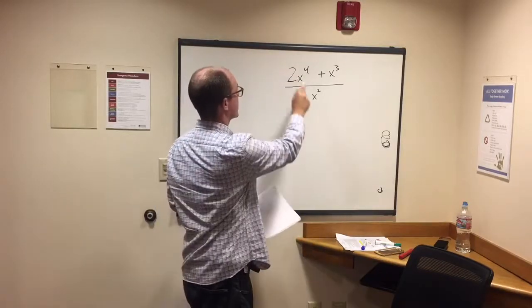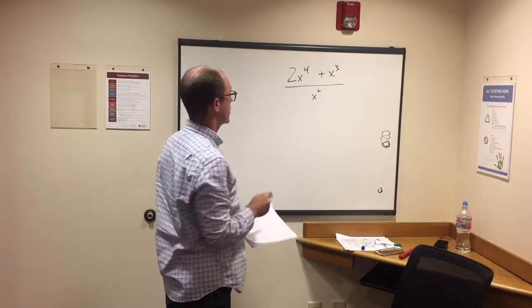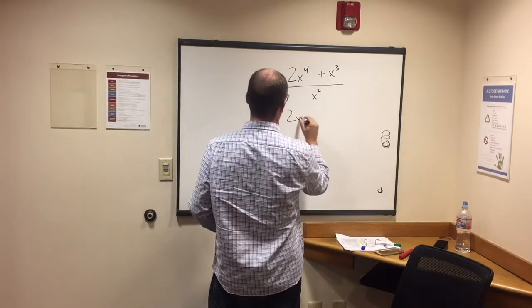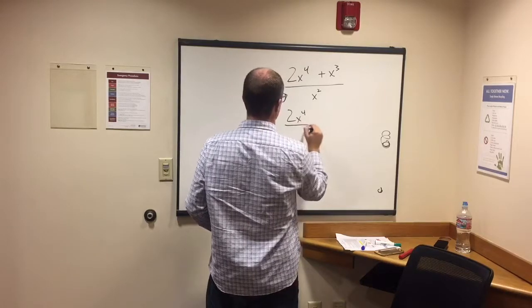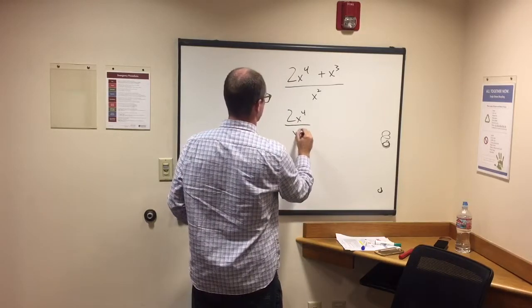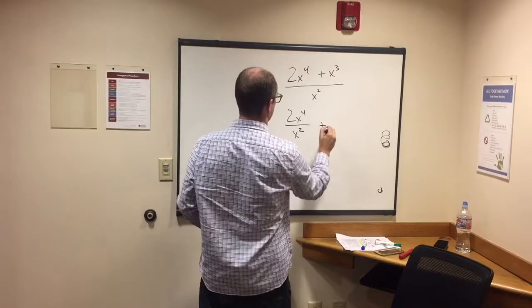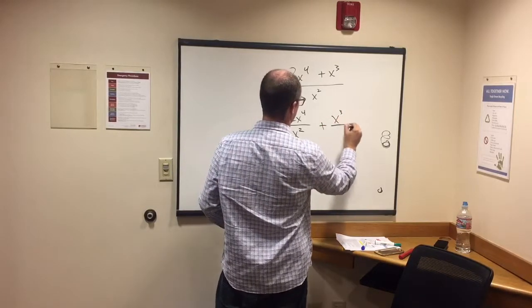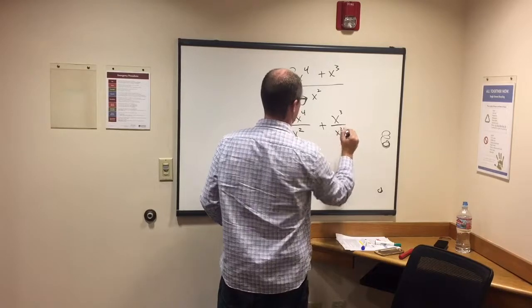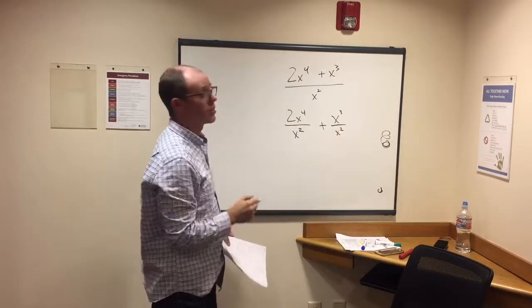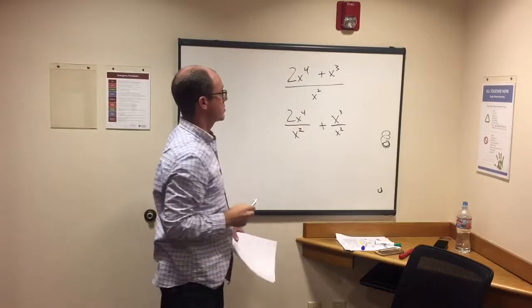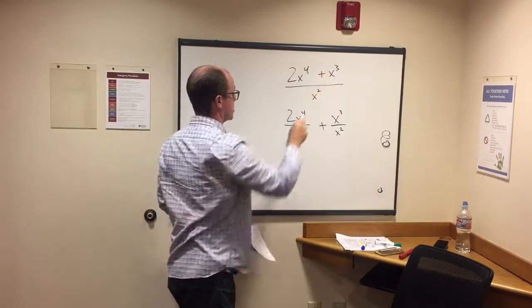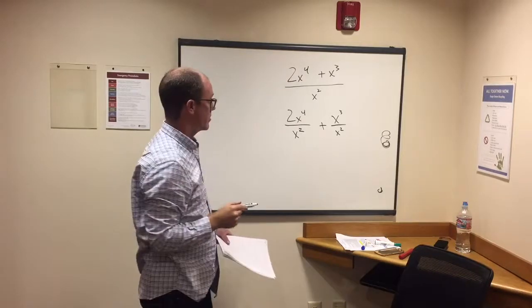And then when we're dividing exponents, you subtract them. So what you have here is 2x to the 4th over x squared plus x to the 3rd over x squared. We divided 2x to the 4th by x squared and plus x to the 3rd divided by x squared. So now we have it set up.